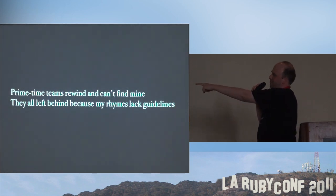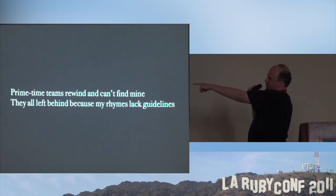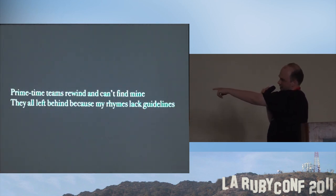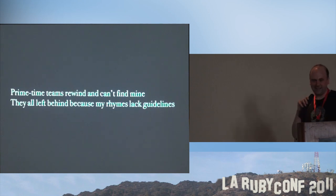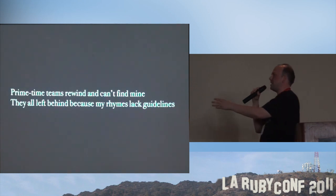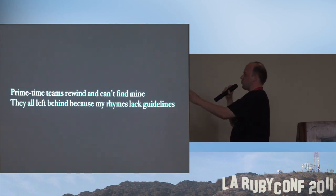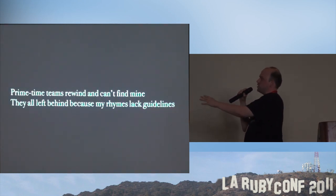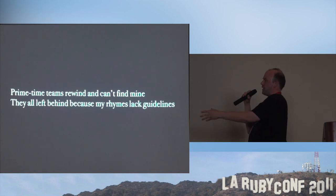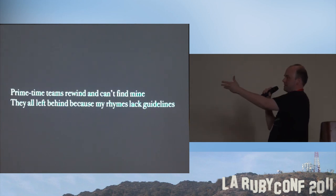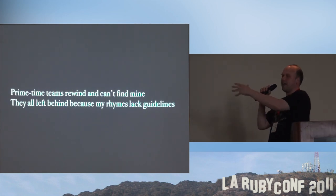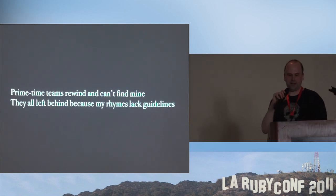It also contains this lyric: 'Primetime teams rewind a campfire line — they all left behind because my rhymes like guidelines.' The idea here is he's saying his rhyme scheme is so unformulaic that people, even the best in the field, cannot keep up with it.